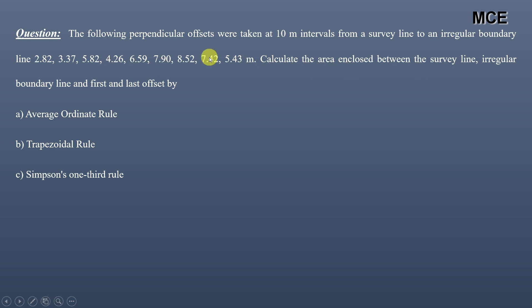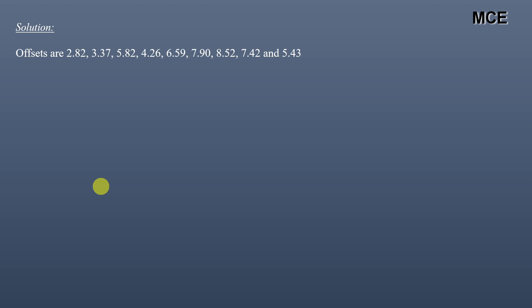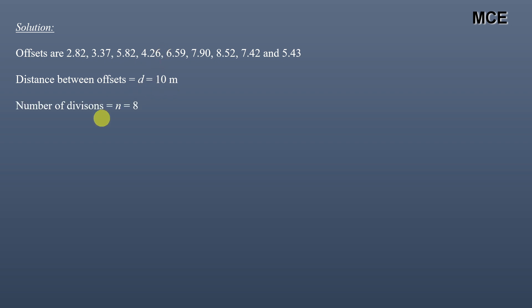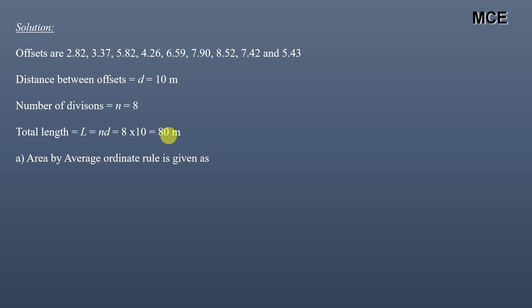We have to find the area enclosed between the survey line, the irregular boundary line, and the first and last offset using all three rules. The distance between offsets is uniform and equal to 10 meters. With nine offsets, there are eight divisions or segments. Total length equals number of divisions multiplied by the distance between offsets: 8 × 10 = 80 meters.